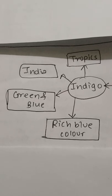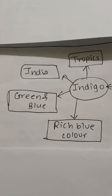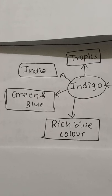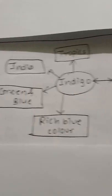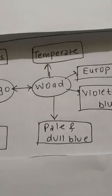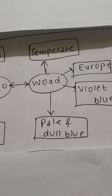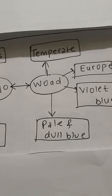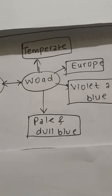Indigo gave green and blue color. The color was very rich, which in woad, the blue color was dull and pale.